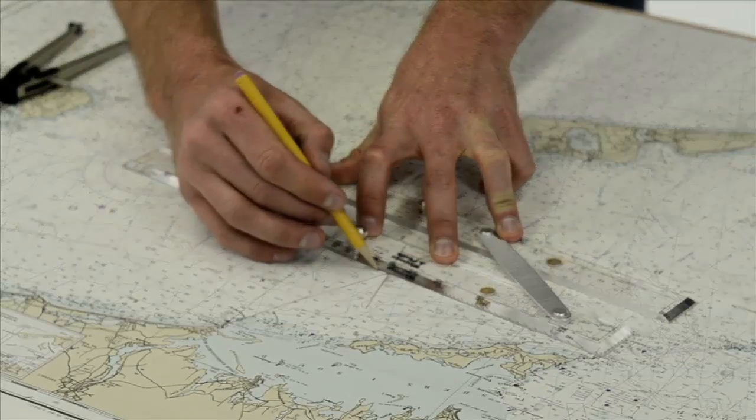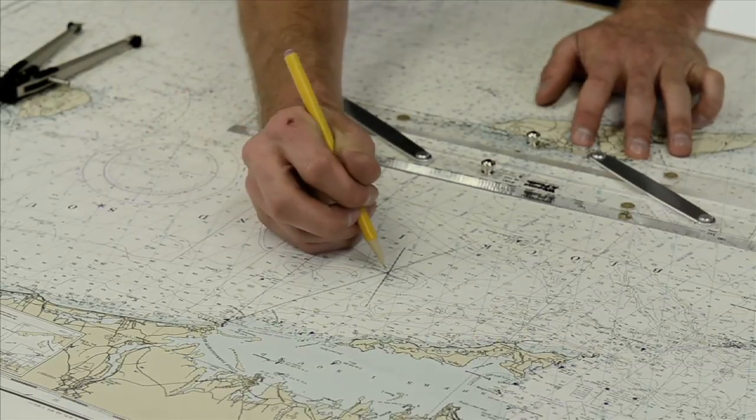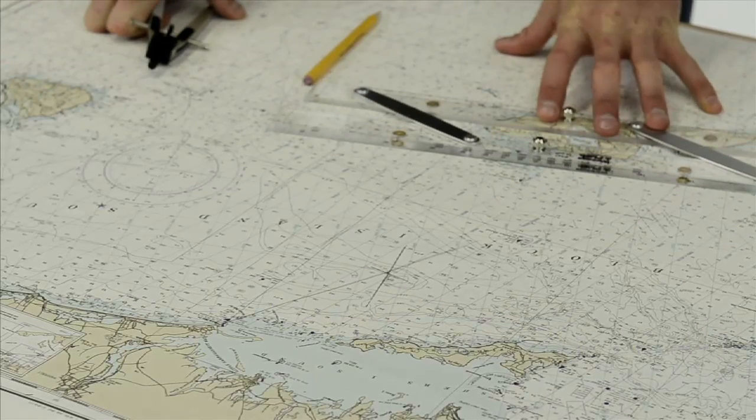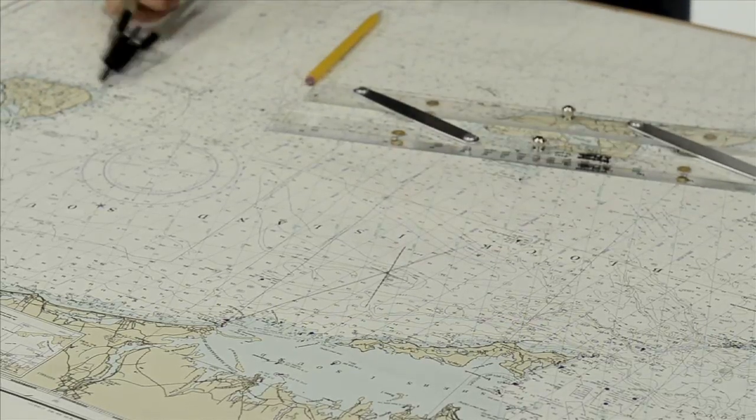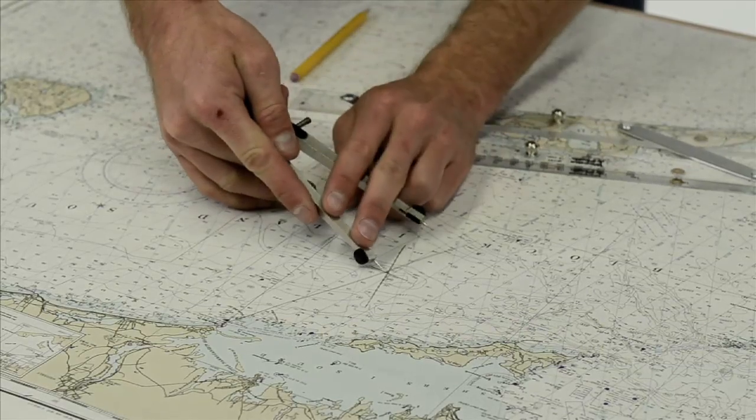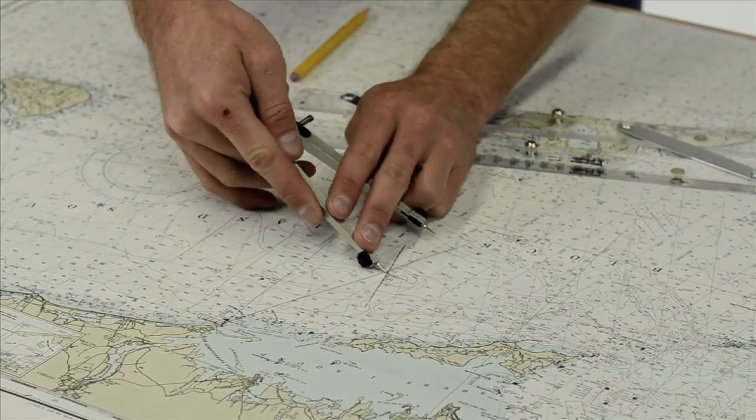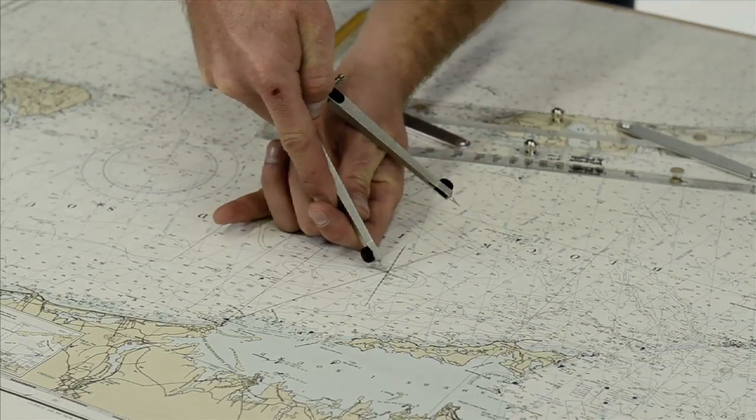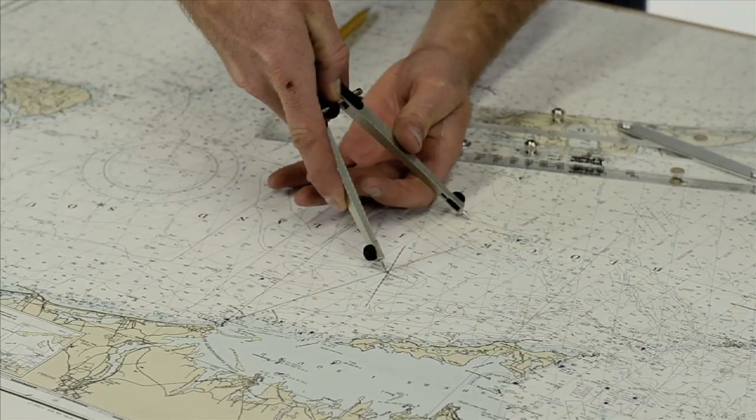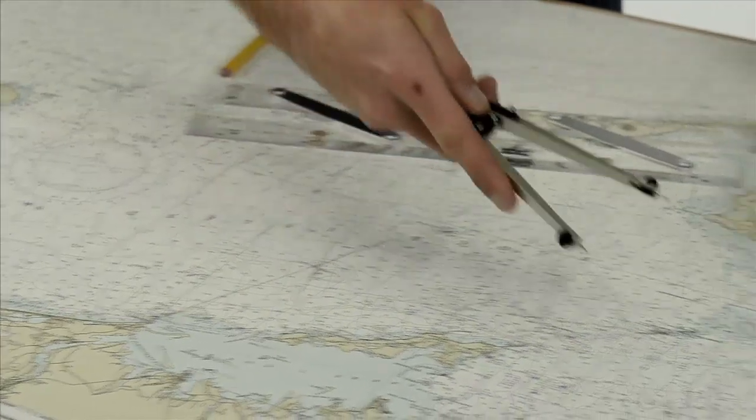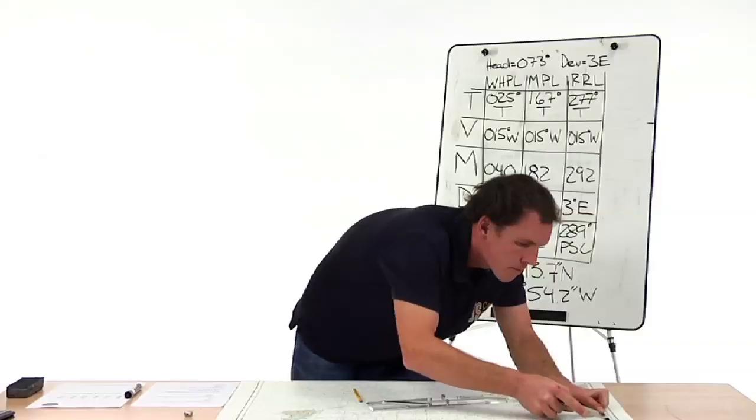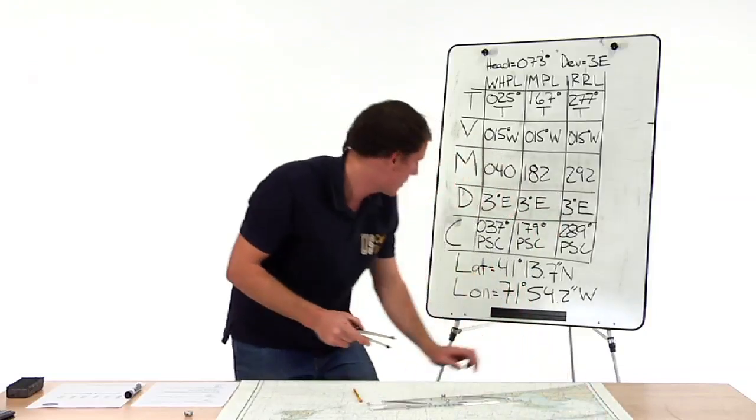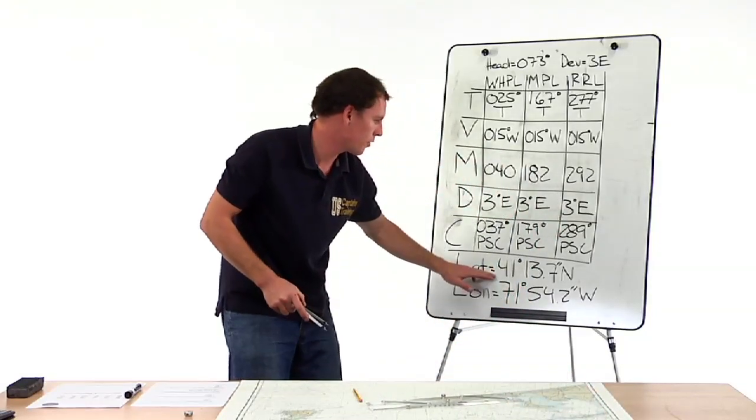And now we have a small triangle. We find the center of the triangle and we take our latitude and longitude from this point. So we take our dividers, put it at the point in the center of the triangle and we bring it down and read our latitude. So here we are, bring it over to the latitude scale. And we get 41, 13.7.